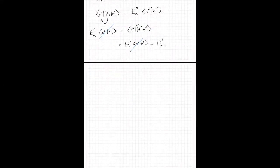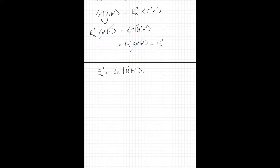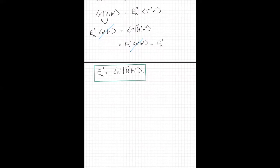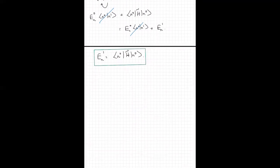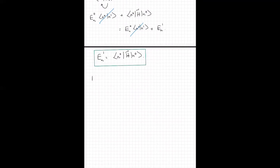So we have a very neat expression for the first-order correction to the nth eigenenergy: EN1 is simply ⟨n0|H-tilde|n0⟩. It is the expectation value of the perturbation in the unperturbed eigenkets. This is a very important equation, so let's box it. To first order in perturbation theory, I write En = EN0 + EN1, which equals EN0 + ⟨n0|H-tilde|n0⟩.